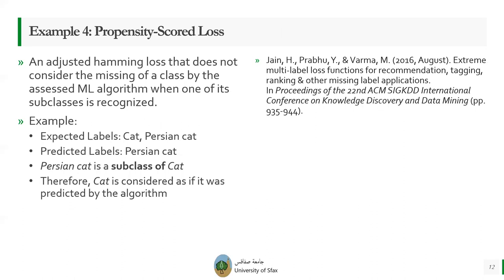Another very interesting example is the propensity scored loss. It is an adjusted Hamming loss that does not penalize the missing of a class by the machine learning algorithm when one of its subclasses is recognized. For example, suppose an image has 'cat' and 'person cat' as labels, but the ML algorithm only recognized 'person cat.' Since 'person cat' is a subclass of 'cat,' cat is considered as if it was predicted by the algorithm.